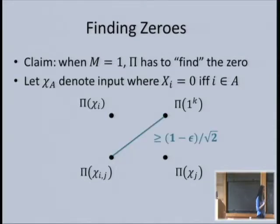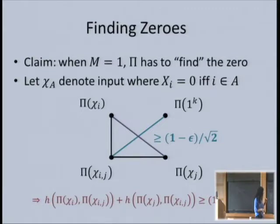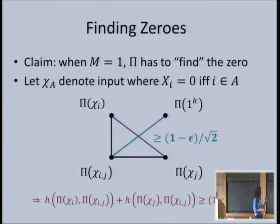Using the triangle inequality, the sum of two sides must be at least the diagonal. For any two players i and j: either the protocol can tell whether only player i had a zero versus both i and j, or it can tell whether only player j had a zero versus both i and j. We define γ_i as the protocol's average ability to tell if only player i had a zero or if player i and some random player z had a zero—the expectation over a uniformly chosen player z of the distance between when only i had a zero and when both i and z had a zero.